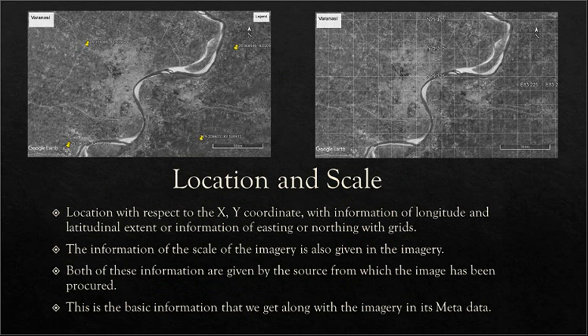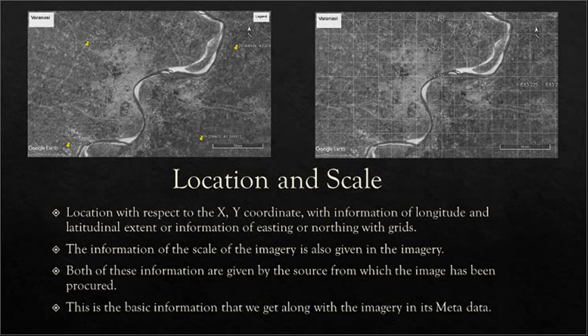Coming to location — along with location we get one other important factor which is called the scale. In any imagery when we collect it from any source, the source provides us information about the location and the scale of the imagery. Location is given with respect to the XY coordinate, that is the information of latitude and longitude extension with respect to grids.